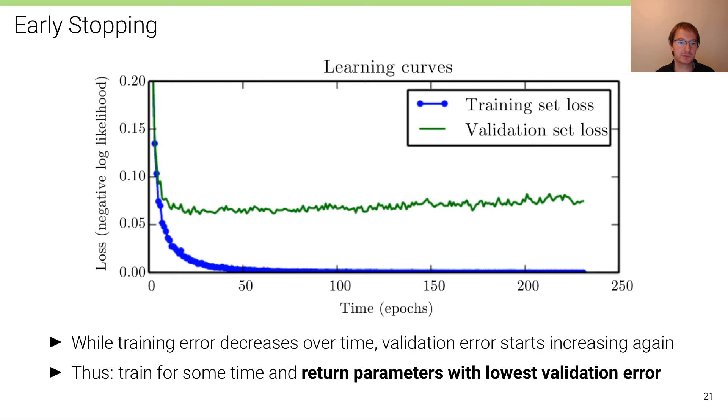That's called early stopping. We're not waiting until the training error becomes arbitrarily small, but we're stopping training at an earlier point in time when the validation error hasn't decreased for a while.